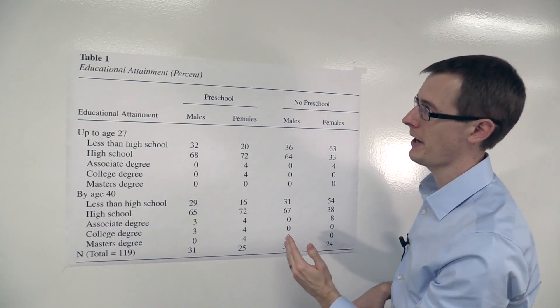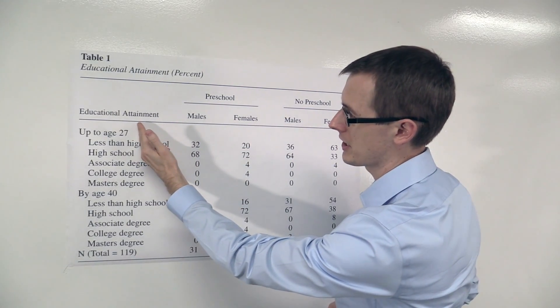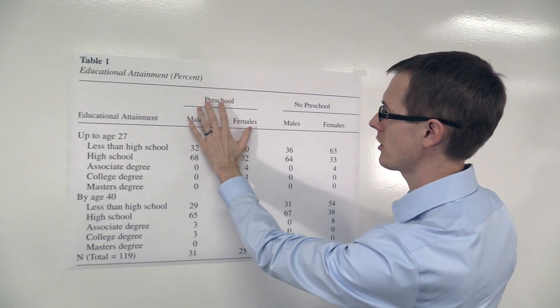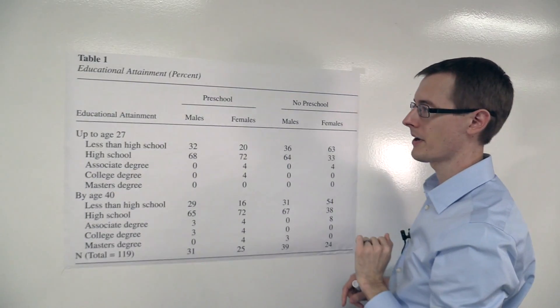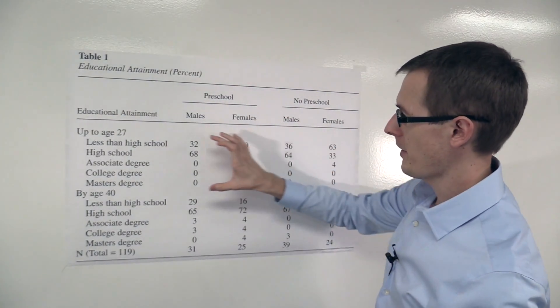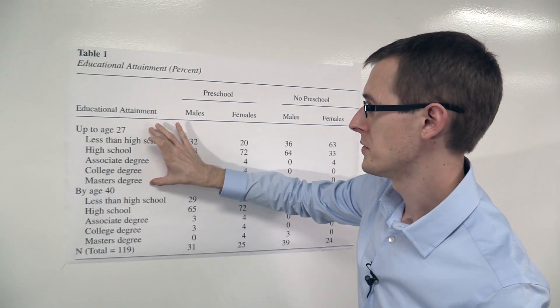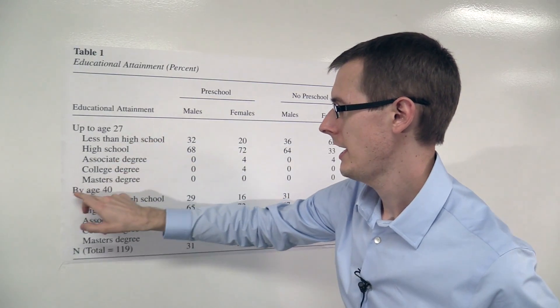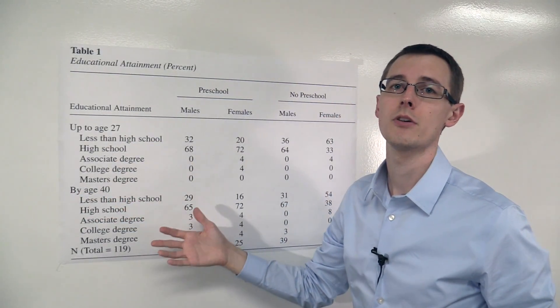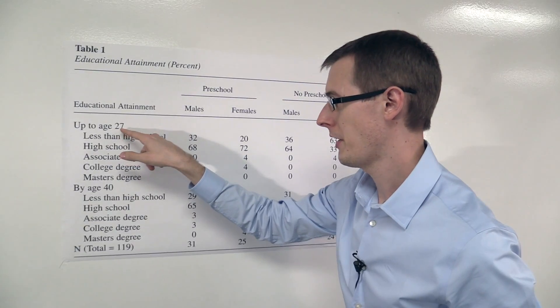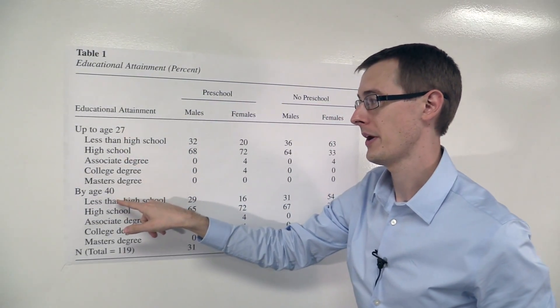And what we're going to do is compare the outcomes, educational attainment, across the treatment group with the control group. So they've got two different sets of rows here, up to age 27 and then by age 40. This is because two different surveys were done, one when they're about age 27 and then another when they're age 40.